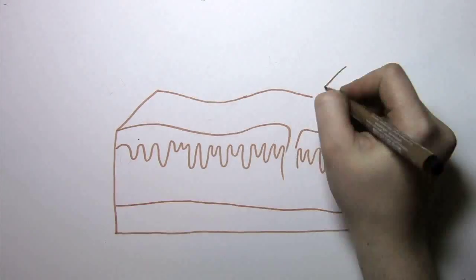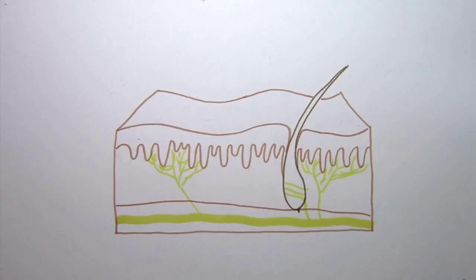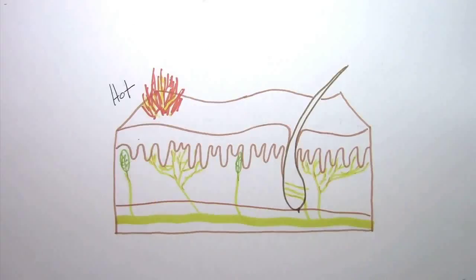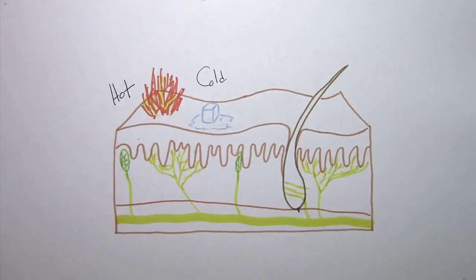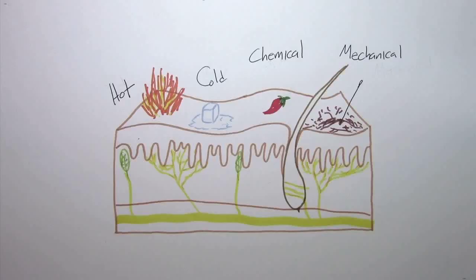The sensation of pain is detected by pain receptors called nociceptors. There are thermal nociceptors that are activated by harmful hot or cold temperatures, chemical nociceptors that are activated by chemical irritants like capsaicin and spicy food, and mechanical nociceptors that are activated by excessive pressure.